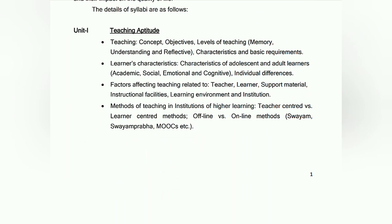Unit 1 is Teaching Aptitude. You will have teaching concepts, objectives, and levels of teaching — memory, understanding, and reflective — and characteristics. Basic requirements: there will be general questions which can be academic, social, or emotional. Individual differences and factors related to teaching like teacher, learner, support material, and learning environment are also included.